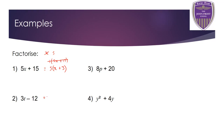Number two: we've got the expression 3t take away 12. What goes into both 3 and 12? The answer is 3, so that goes outside the brackets. Inside: 3 times t gives 3t, and 3 times 4 gives 12. So 3t − 12 factorizes to 3(t − 4).